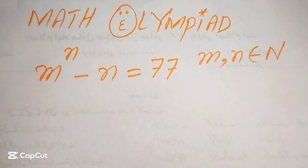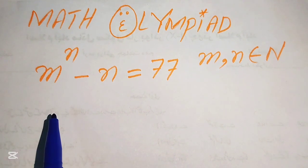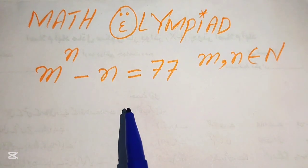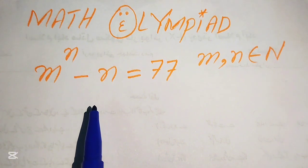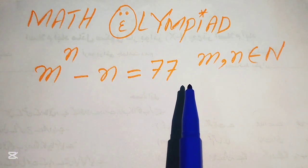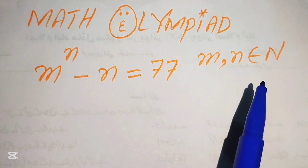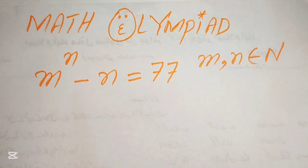Hello everyone, welcome to solve this nice math olympiad algebra problem. Here we have m to the power of n minus n equals to 77, and we solve this problem for the values of m and n. The restriction is that m and n must belong to the natural numbers, meaning we solve this problem for natural values of m and n only.